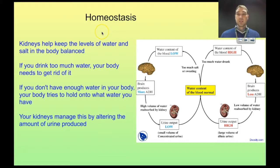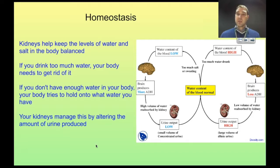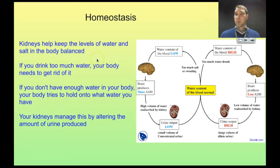Let's talk about homeostasis. The idea of homeostasis is that you want your body to stay around about the same internally to keep you healthy. This involves things like body temperature and the amount of oxygen in your blood. In terms of the urinary system, the kidneys are very important because they help balance the amount of water in your body — too much water can be bad, too little water can be bad, and the kidneys help manage that.